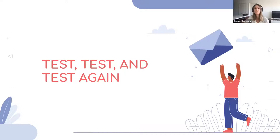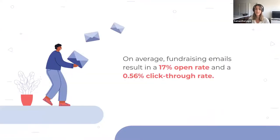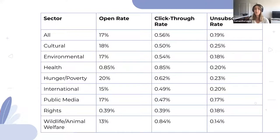Tip number eight: track your results. Tips one through seven are important, but the real indicator of success is in your metrics. You can tell a good email campaign from a bad one by comparing it against previous campaigns and industry benchmarks. On average, fundraising emails result in a 17% open rate and a 0.56% click-through rate. If your open rates fall below these percentages, reconsider your current strategy. If your results exceed benchmarks, congratulations! Common nonprofit benchmarks come from M&R Benchmarks, but you can also look to HubSpot, Campaign Monitor, Constant Contact, and Mailchimp — choose one and stay consistent.